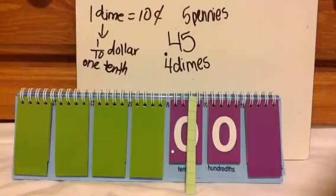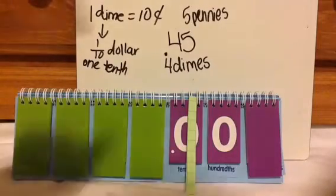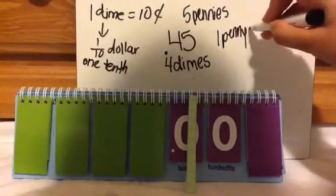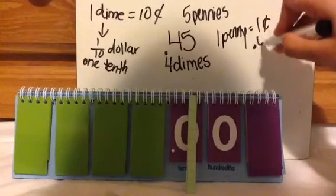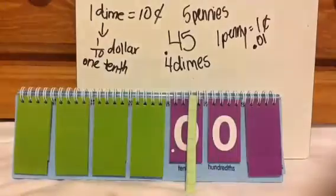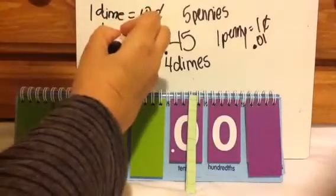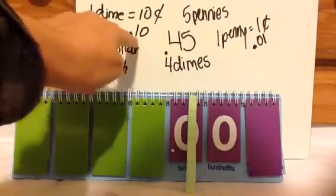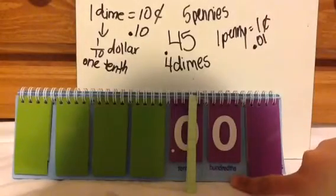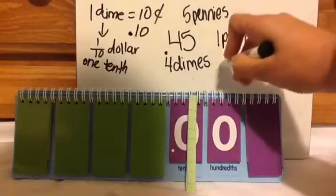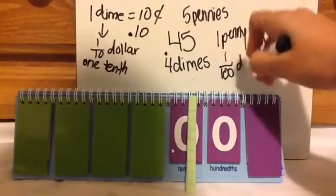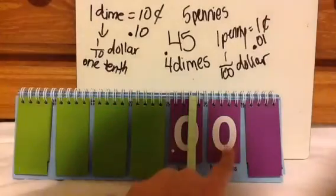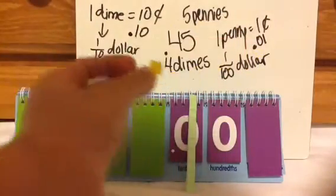If you have 5 pennies — well, 1 penny is 1 cent. A dime is 10 cents, that's 1 tenth because it's in the tenths place. And 1 cent, that's 1 hundredth because it's in the hundredths place. So 1 penny is 1 one-hundredth of a dollar. That's why for this place value we use this small block to represent it, because a hundred of these make one of these.